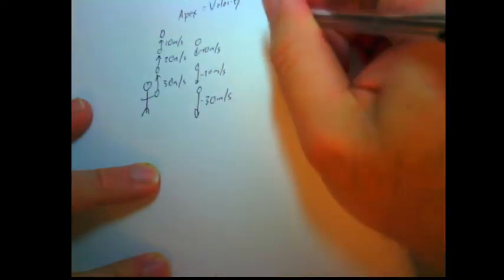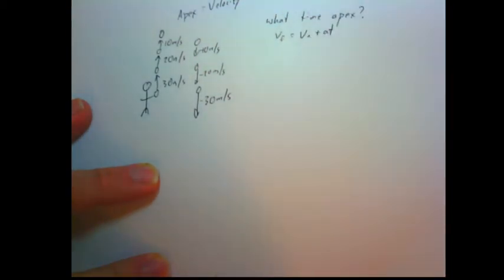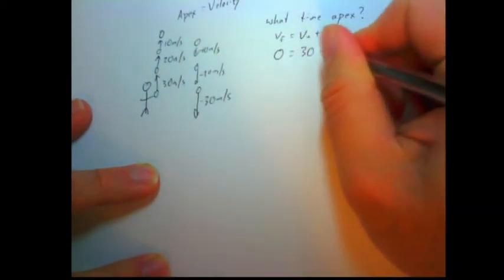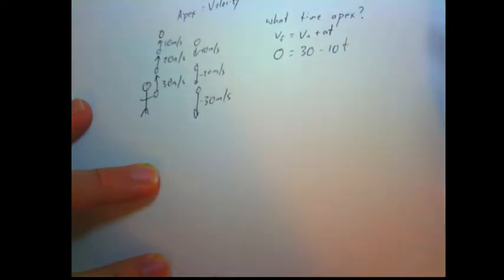Let's apply some math to this. So we want to know what time does it reach the apex? Well, for that we can use VF equals VI plus AT. Because we know at the apex, the final velocity will be zero. Remember, the vertical velocity is always zero at the apex. Our initial velocity was 30. Our acceleration is always negative 10 while we're in free fall, times time.